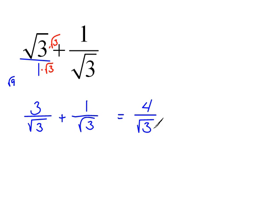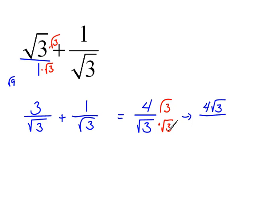Now, we don't leave our answer this way. We need to rationalize our denominator. So we're going to multiply top and bottom by the square root of 3, which will give us 4 times the square root of 3 on top, and on the bottom, the square root of 3 times the square root of 3 is the square root of 9, which is 3.